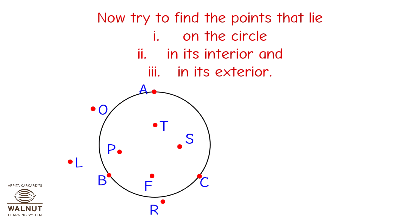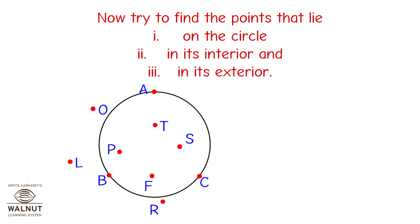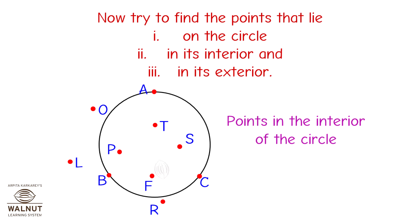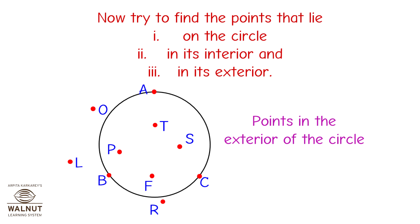Now, try to find the points that lie on the circle, in its interior, and in its exterior. Points on the circle: A, C, B. Points in the interior of the circle: T, S, P, F. Points in the exterior of the circle: L, O, R.